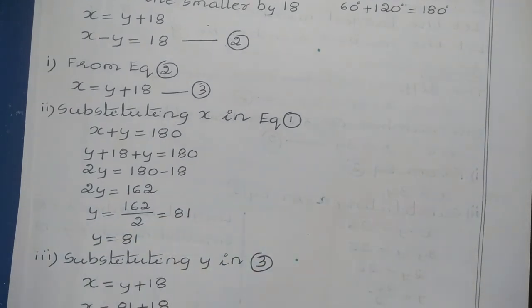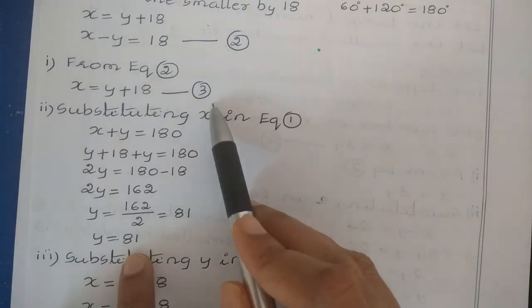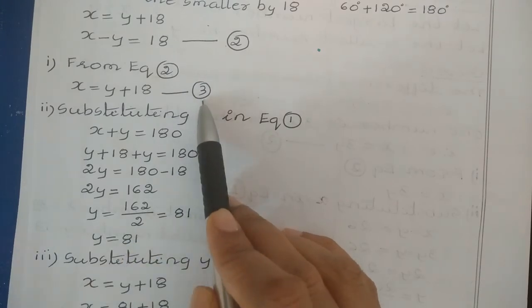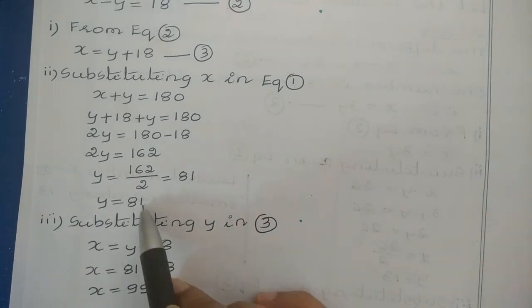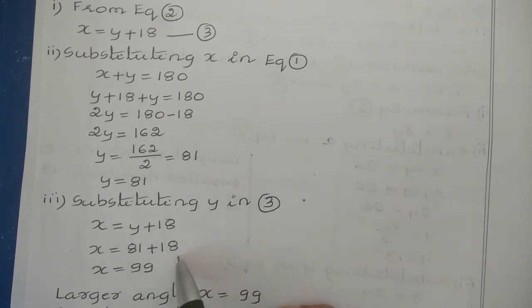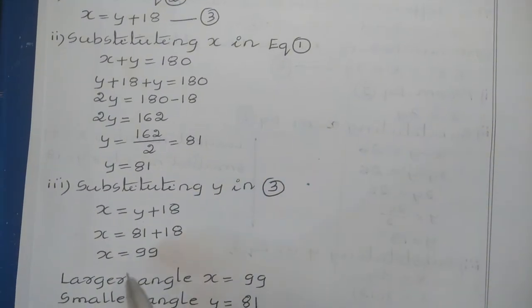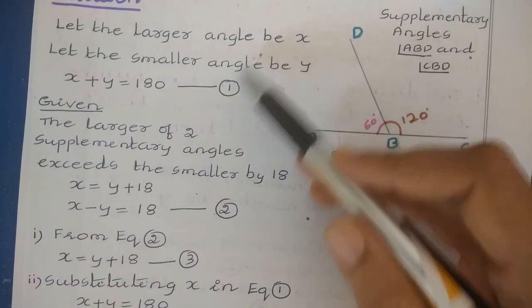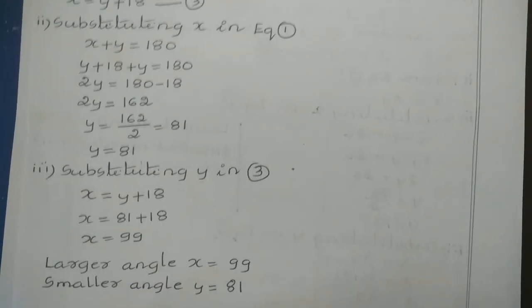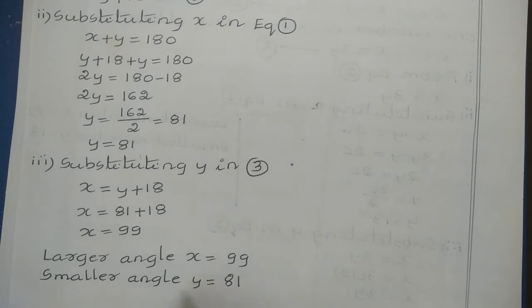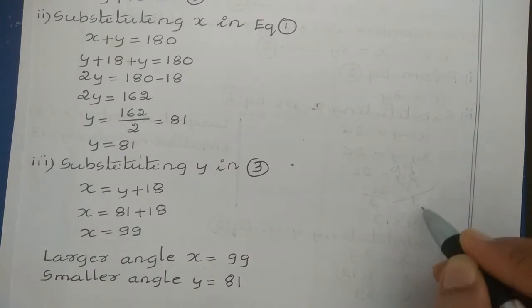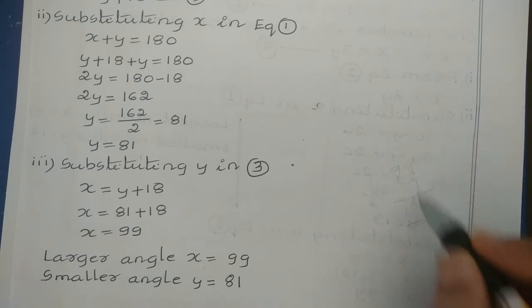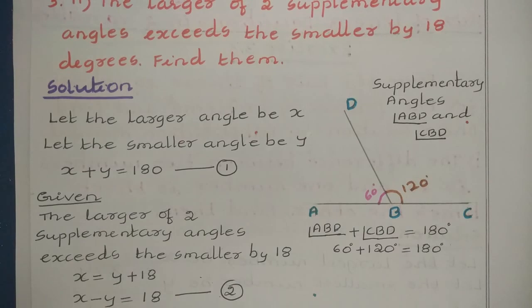So y equals 81. Now substitute this value into equation 3: x equals y plus 18, put y equal to 81, so x equals 81 plus 18, giving x equals 99. The answer is x equals 99 and y equals 81. Since x is the larger angle and y is the smaller angle, the larger angle x equals 99 degrees and the smaller angle y equals 81 degrees. Verification: 99 plus 81 equals 180 degrees, confirming these are supplementary angles. This concludes sub-question 2.